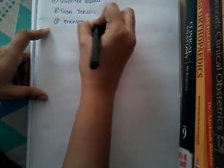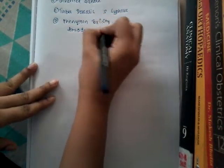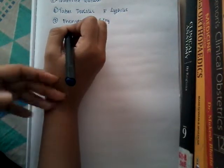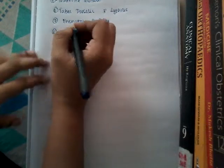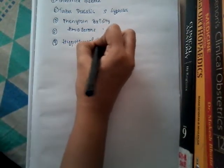Other causes of chronic symmetric progressive cerebellar ataxia include inherited diseases, tabes dorsalis or tertiary syphilis, phenytoin toxicity, amiodarone toxicity, and hypothyroidism — all of these cause chronic symmetric cerebellar ataxia.